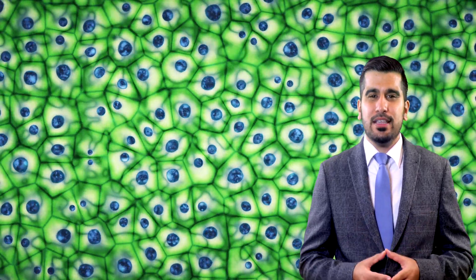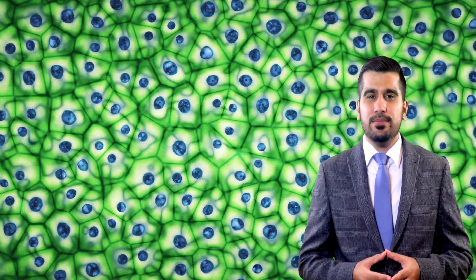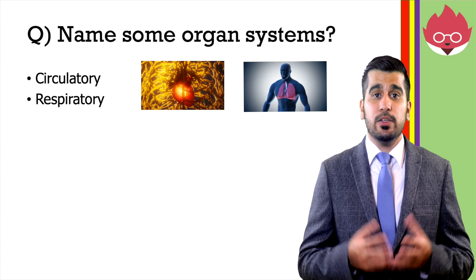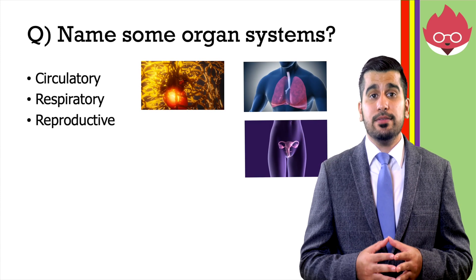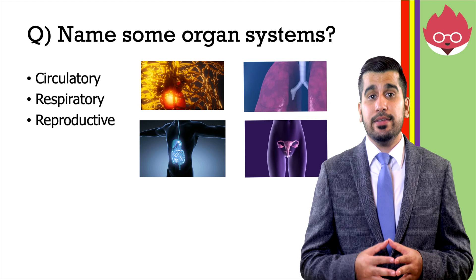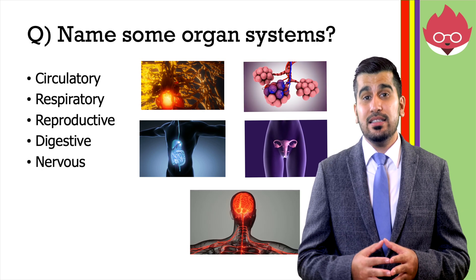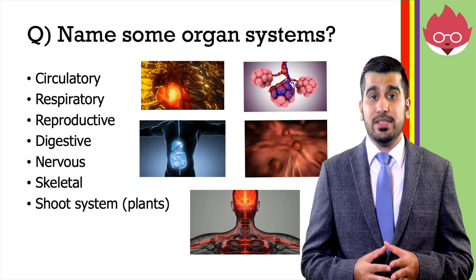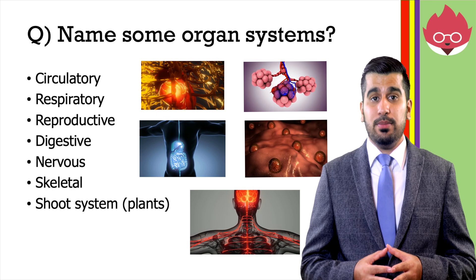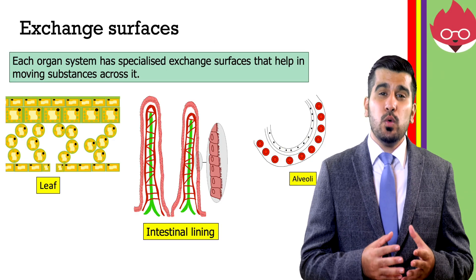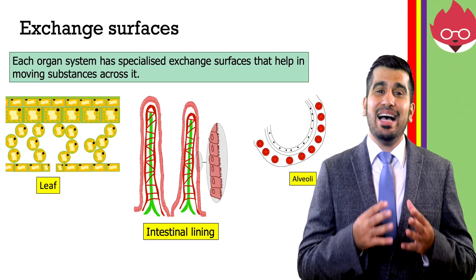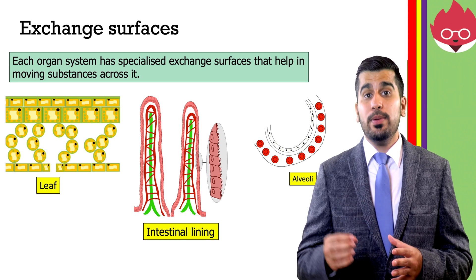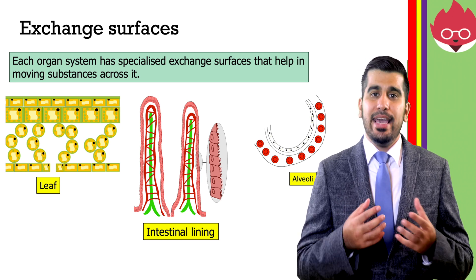Can you name some systems that you have studied? Here are some examples: the circulatory system, the respiratory, the reproductive, the digestive, the nervous, the skeletal, the shoot system found in plants, and the root system found in plants. Each organ system has specialised exchange surfaces that help in moving substances across it.